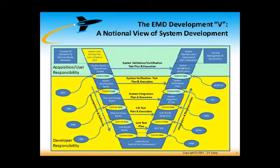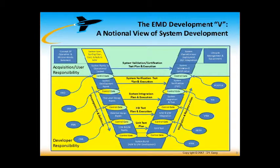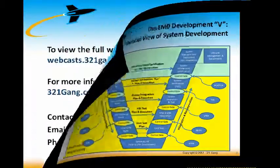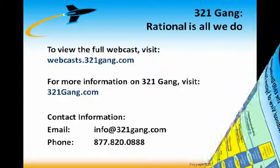As a system engineer, I would probably lose my system engineering license if I didn't have a V in there somewhere. All joking aside, it's important for us to understand that we show the V all the time, but the V is purely a notional construct. It sometimes smacks of the engineering, manufacture, development — milestone B to milestone C.